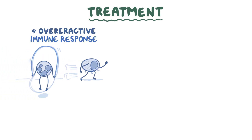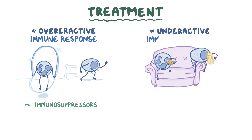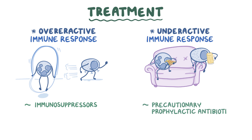Treatment of complement deficiencies depends on the case. Those that lead to an overactive immune response can be given immunosuppressors. In cases with an underactive immune response, it's important to treat harmful infections and to take precautions like prophylactic antibiotics. In some cases, it's possible to supplement a deficient protein, like with C1 inhibitor.